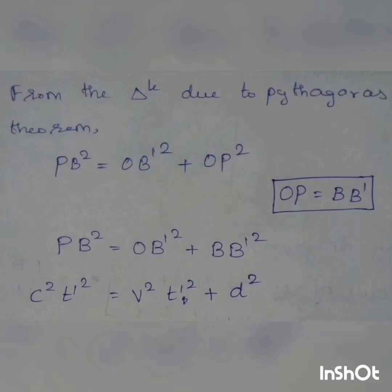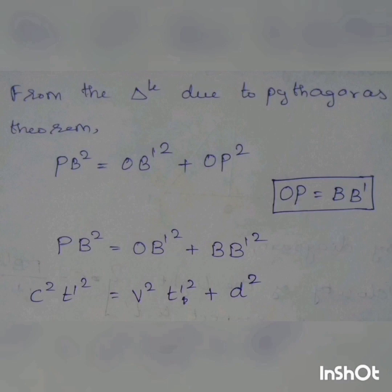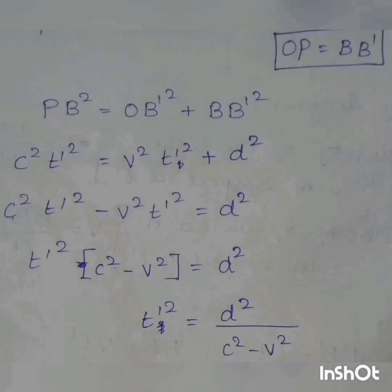We have two terms. We will use these two terms. We will use Pythagoras to use the triangle. Pb² equals ob-dash squared plus ob². We will use each side. If we use each side to the other side, we will use the same side. Now we will substitute: ob equals d, and bb-dash equals v·t-dash. We substitute all the values: c²t², plus v²t², plus d². So, we have t² on one side.